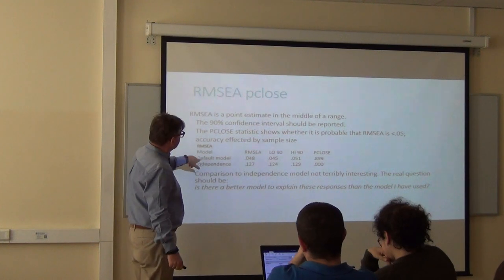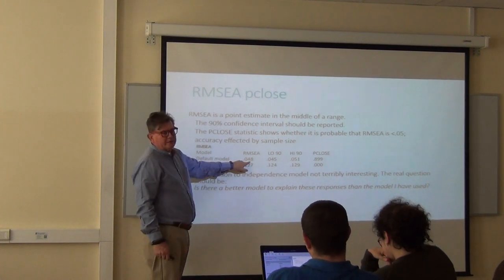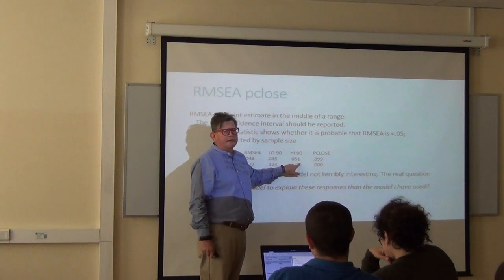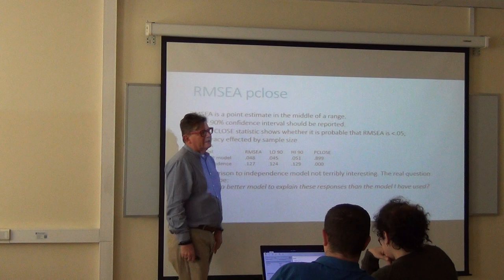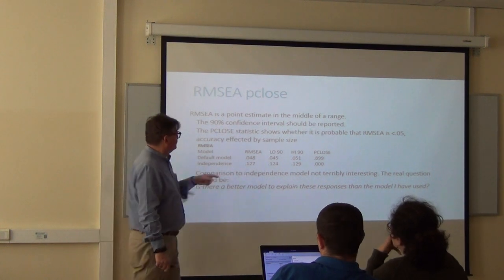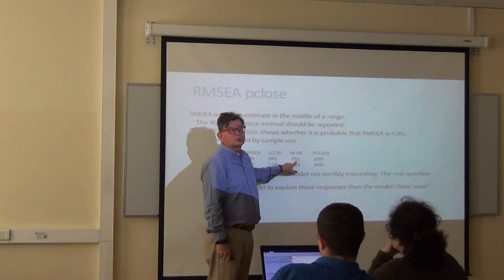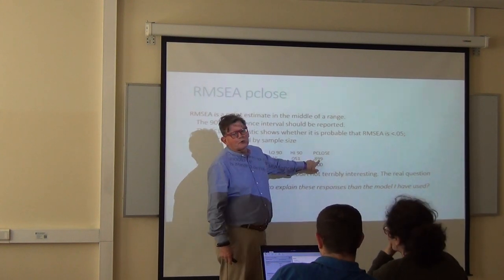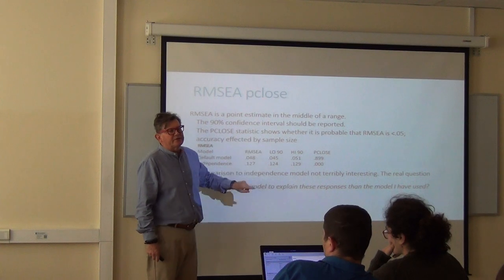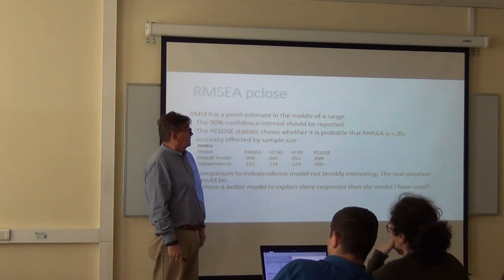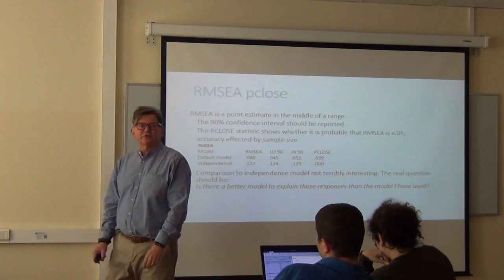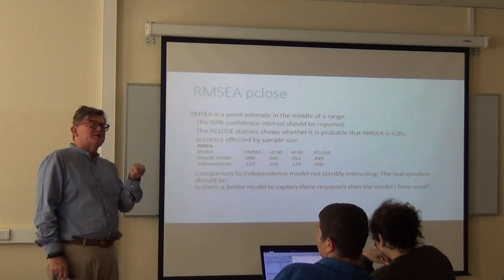Here's what Amos does — it gives you your model, and if it's under 0.05, good. But the range — if the upper confidence interval is over 0.05, some people say this is a bad model. This is the probability p-close, which is the probability that the true value is under 0.05. Given where it's reported and its confidence interval, it says there's 90% certainty that the true value is under 0.05.